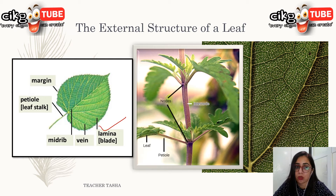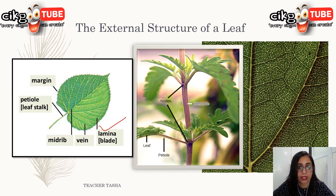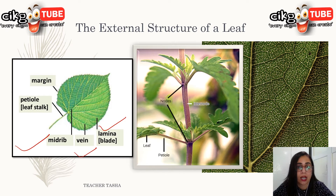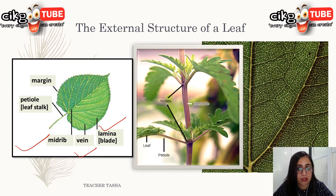The lamina is also thin, which allows gases involved in photosynthesis to diffuse efficiently in the leaf. It has a midrib and veins, which contain vascular tissues — namely xylem and phloem.